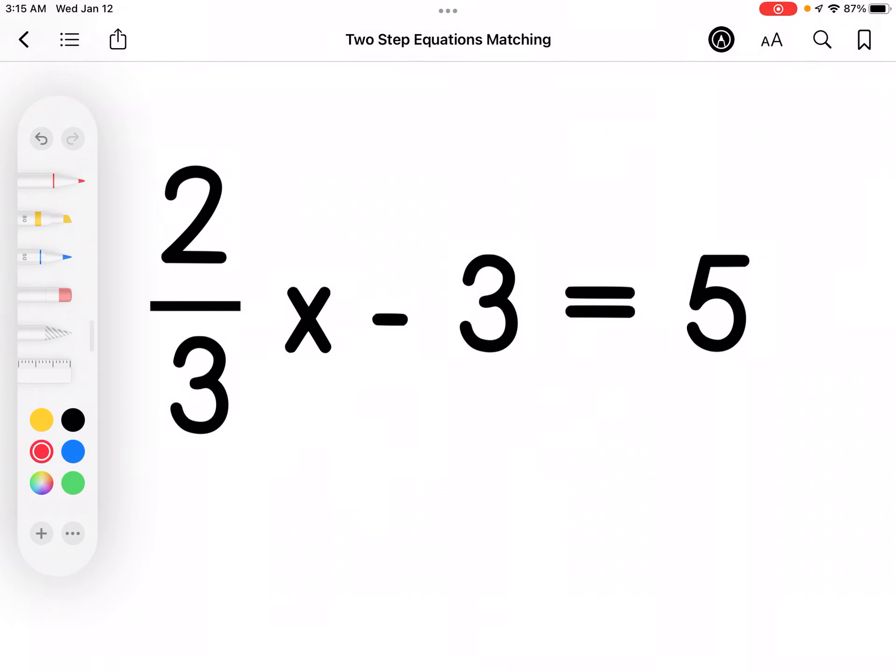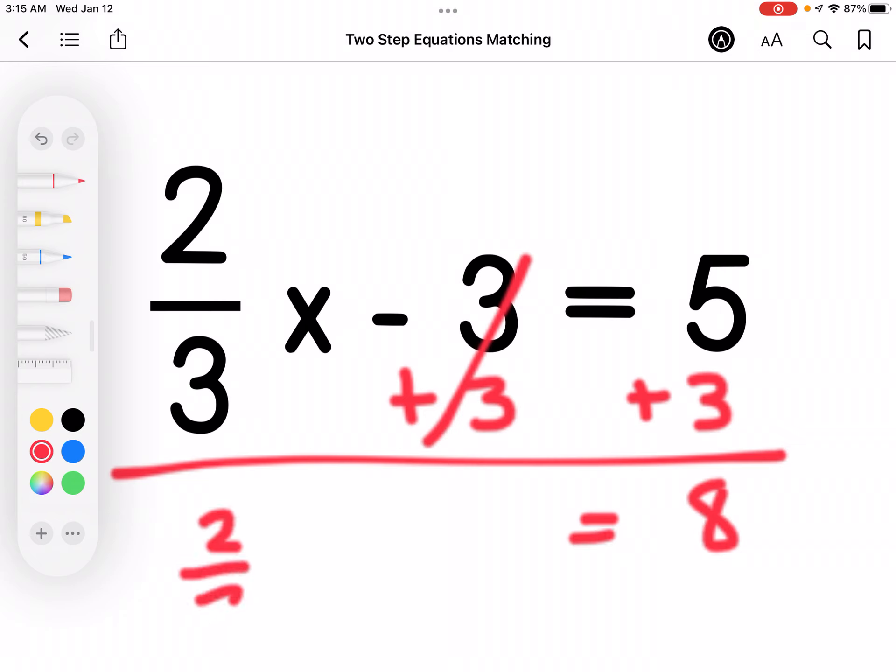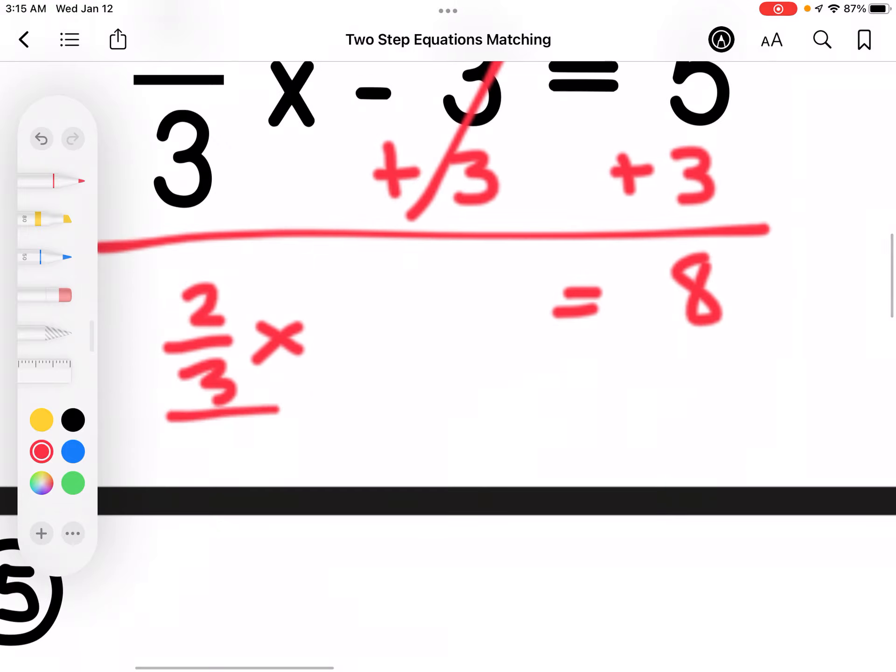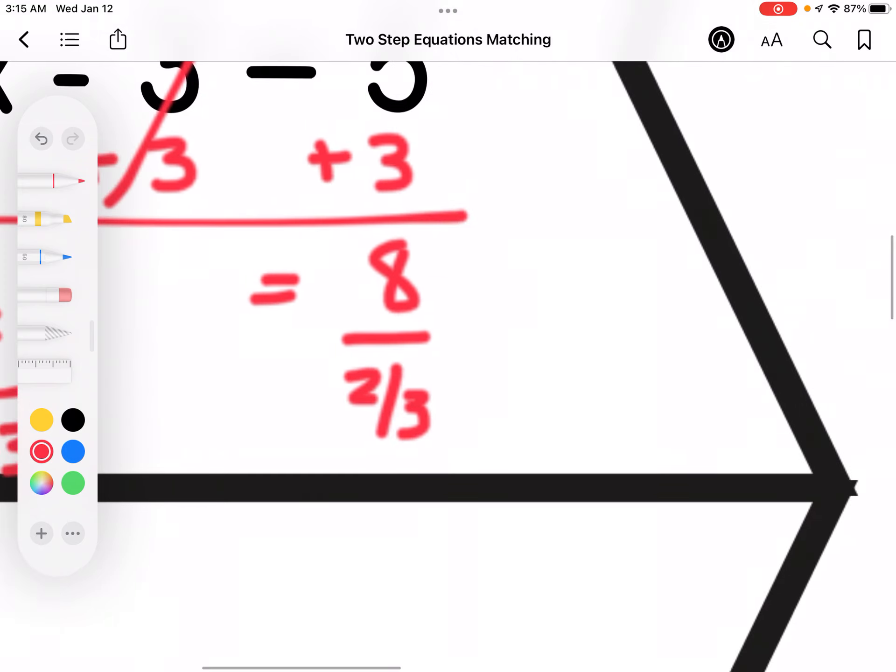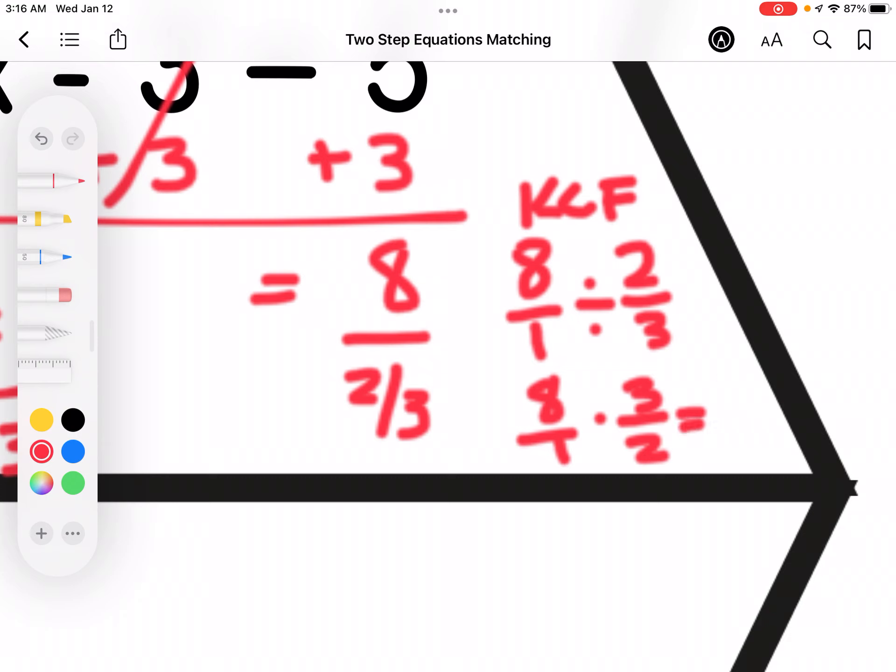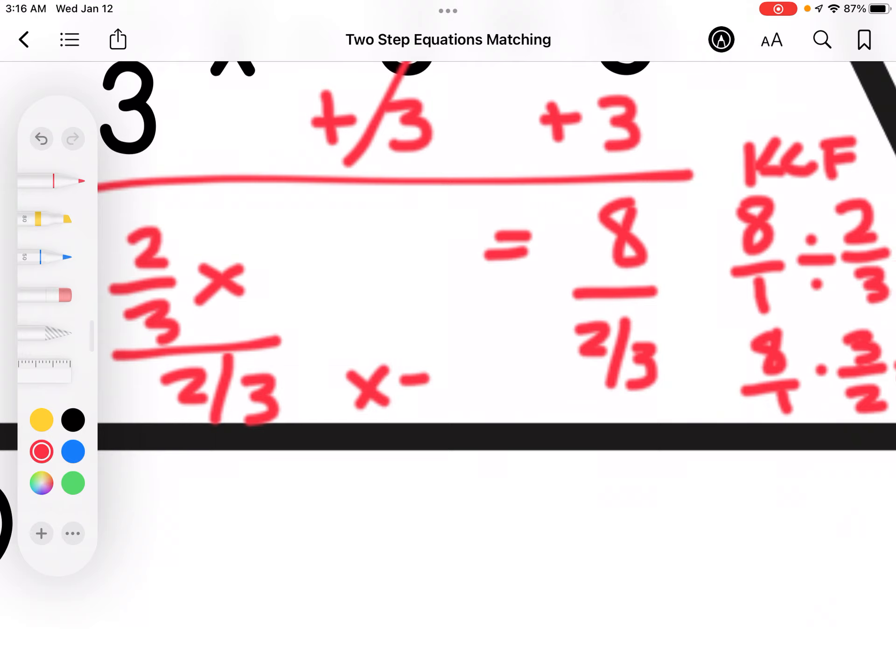This one, because I've subtracted 3 from x, I'm going to add 3 to both sides. So if I multiply by 2 thirds, then the opposite would be to divide by 2 thirds. So I'm going to divide 8 by 2 thirds, which actually looks like 8 over 1 divided by 2 thirds, which is going to be 8 over 1 times 3 over 2 because you have to keep change flip. So you end up with 24 over 2, which is going to be 12. So x equals 12.